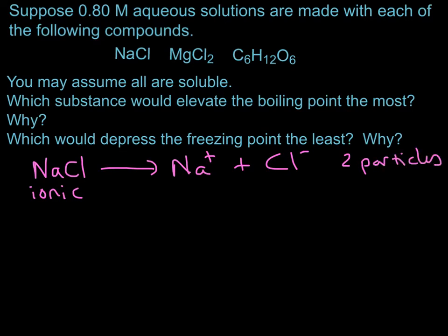Magnesium chloride is also an ionic compound. Magnesium chloride dissolves into magnesium cations plus two chloride anions. So each formula unit for magnesium chloride dissolves into three particles.